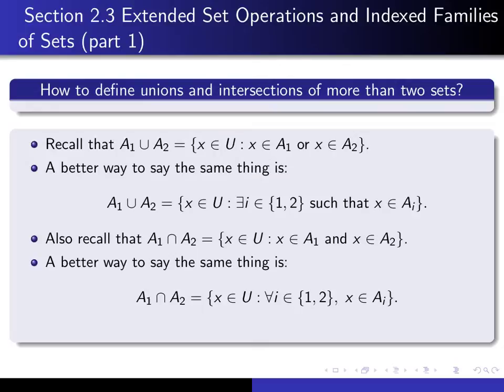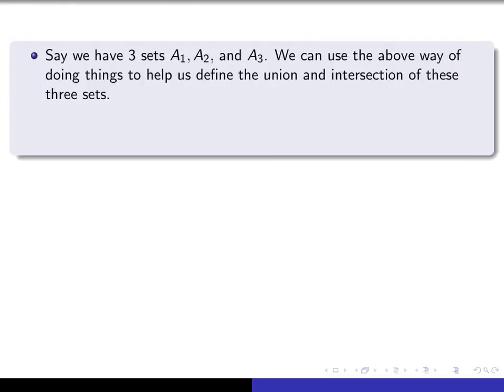The reason that these indexed forms are better ways of saying it is that they generalize to the situation where we have more sets. Notice the only difference between the union and the intersection is the type of quantifier we use to describe the index. Now, suppose instead we have three sets, A1, A2, and A3. We're going to use the above approach in order to define the union and intersection of these three sets.